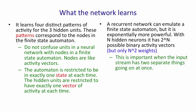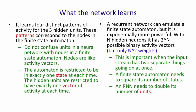This is important when the input stream has two separate things going on at once. A finite state automaton needs to square its number of states in order to deal with the fact that there's two things going on at once. A recurrent neural network only needs to double its number of hidden units. By doubling the number of units, it does, of course, square the number of binary vector states that it has.